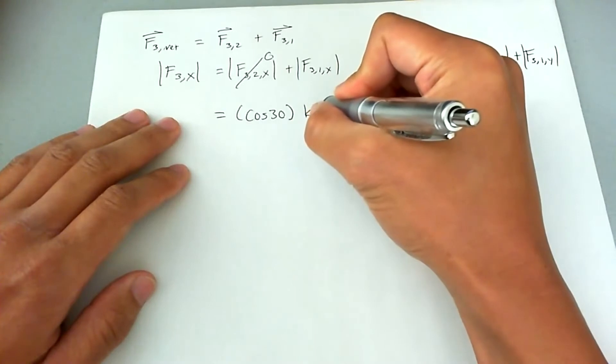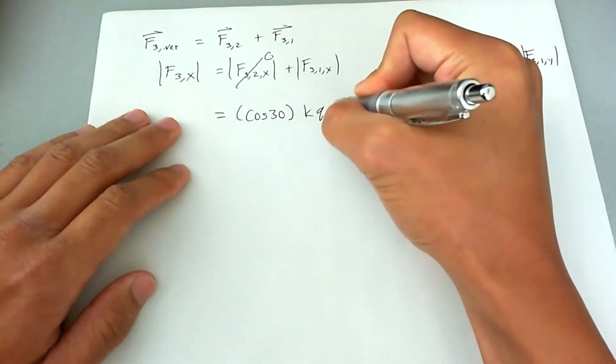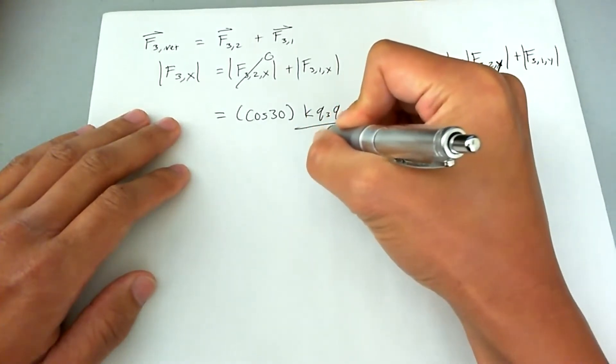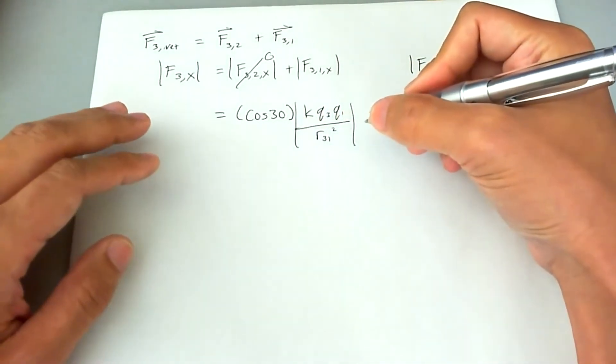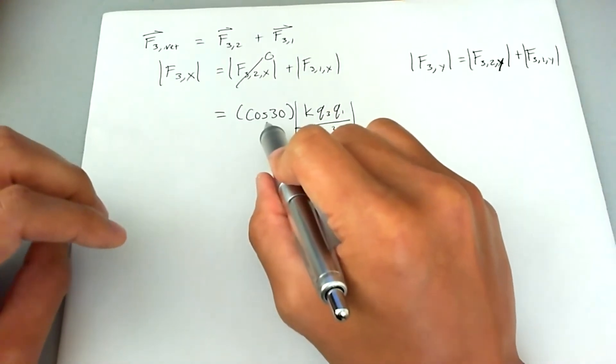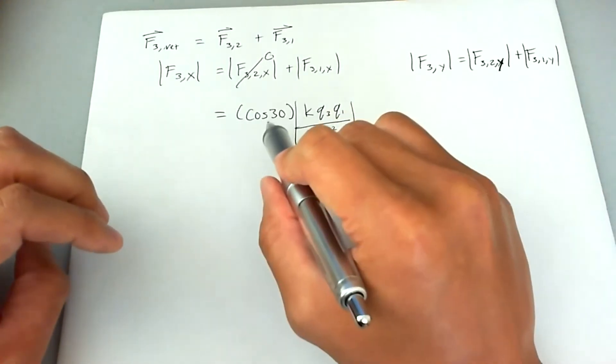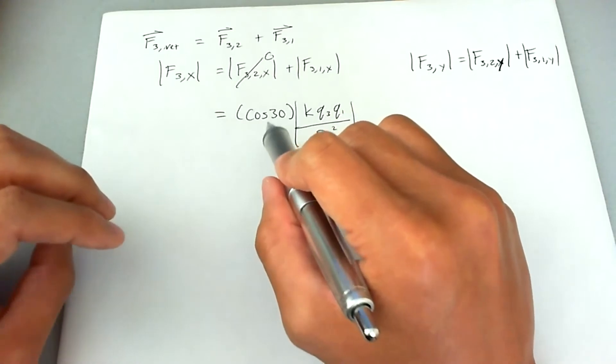So I'm going to go ahead and let's call that k q3 q1 divided by r31 squared. And I'll just go ahead and put an absolute value sign over it. The reason why I use cosine instead of sine is because due to SOHCAHTOA, which is a method I was just talking about.